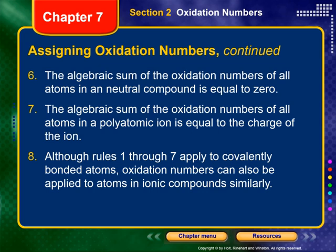Number eight: although rules one through seven apply to covalently bonded atoms, oxidation numbers can also be applied to atoms in ionic compounds using the exact same rules.